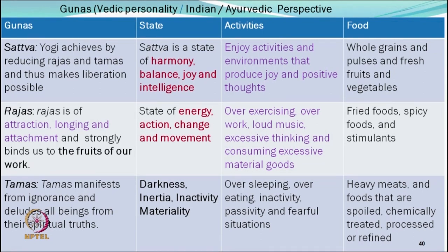Second guna is Rajas — it is of attraction, longing, and attachment and strongly binds us to the fruit of our work. During this state, we have high energy, action, change, and movement. Activities include over-exercising, overwork, loud music, excessive thinking, and consuming excessive material goods. During this period, we rely more on external locus of control or external motivation. Food connected with Rajasic style: fried foods, spicy food, and stimulants.